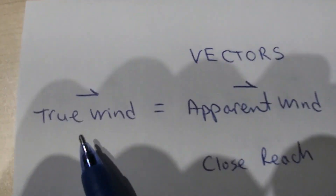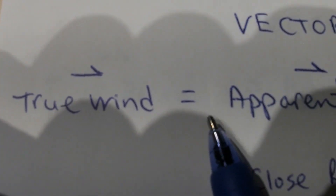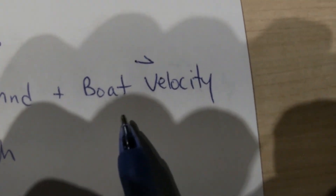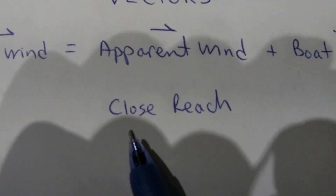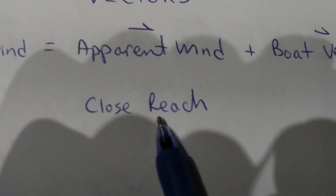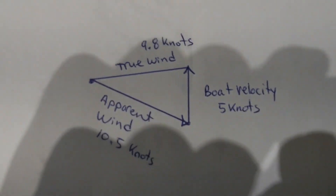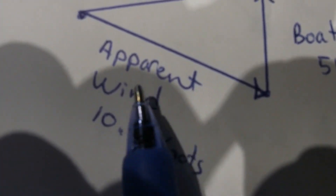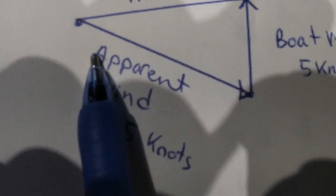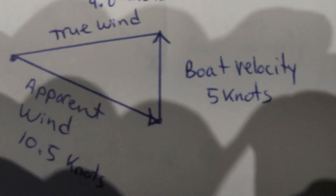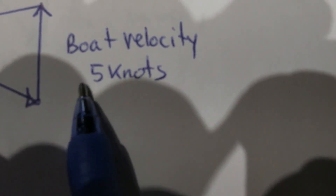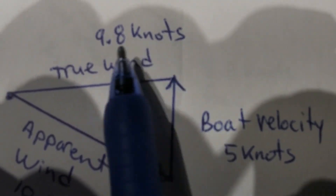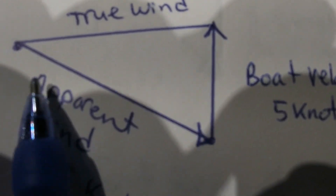The true wind is equal to the apparent wind vector plus the boat velocity vector, and you've got to work this out graphically or use an online program. We're measuring the apparent wind with my wind speed monitor at 10.5 knots, and we know our speed over the ground from the GPS is 5 knots.